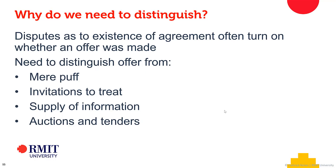We've already explored this in the context of Gibson, where we looked at a document that was probably an invitation to treat or an invitation to negotiate. We've also thought about it in the context of Carlill v Carbolic Smokeball, where there were arguments that the extraordinary payment promised if the smokeball didn't work was not in fact a promise to pay, but a puff or boast. Other relevant conduct includes supplying information, and it's important to understand the role of offer and acceptance in the context of auctions and tenders.